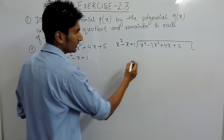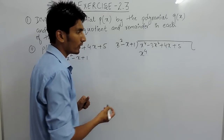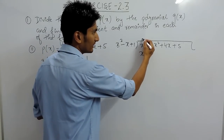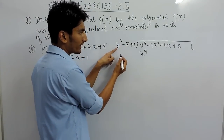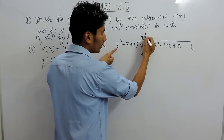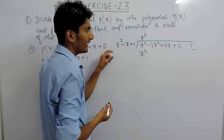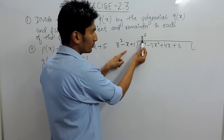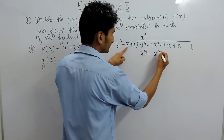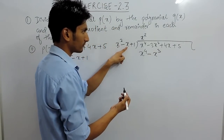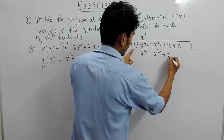To divide, you have to make x to the power 4 here. So obviously you have to multiply x squared with a variable so that we can get x to the power 4. Already here are 2x, so we need 2 more x. So x squared multiplied by x squared is x to the power 4. After that multiply x squared by x to get x cubed, and x squared by 1 gives x squared.